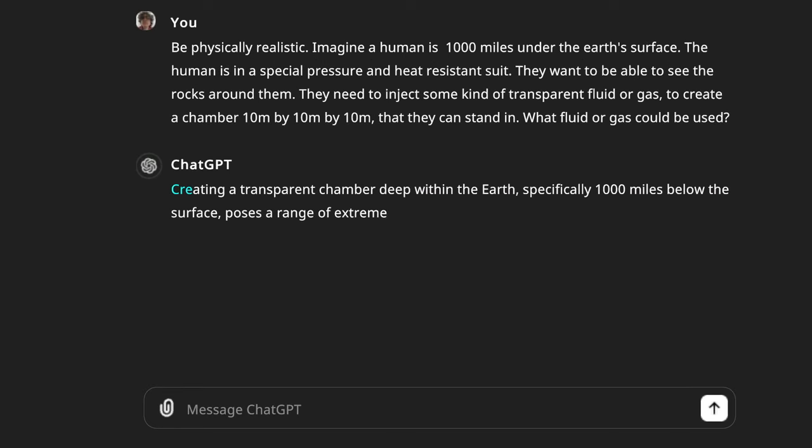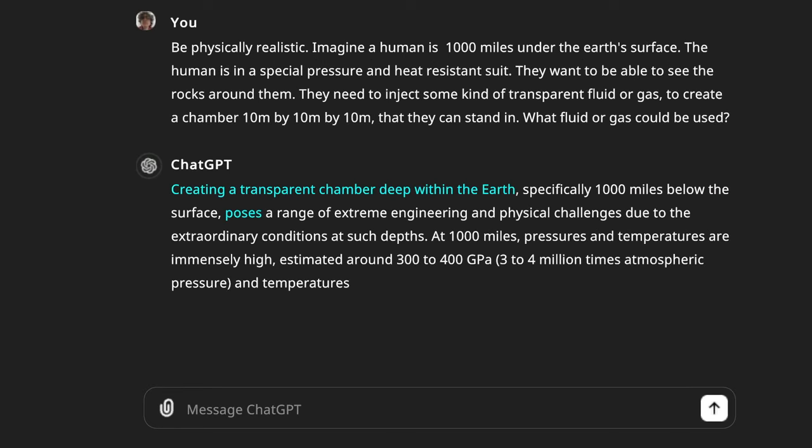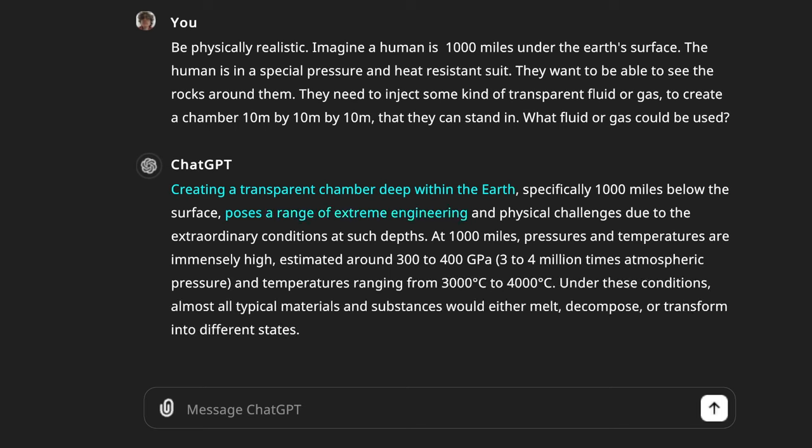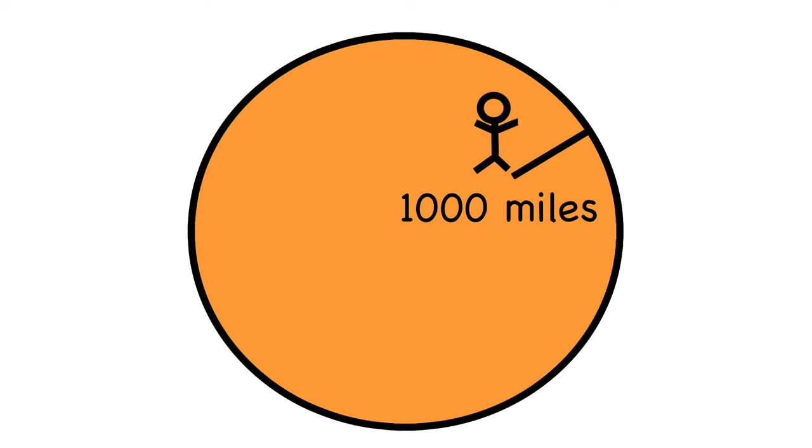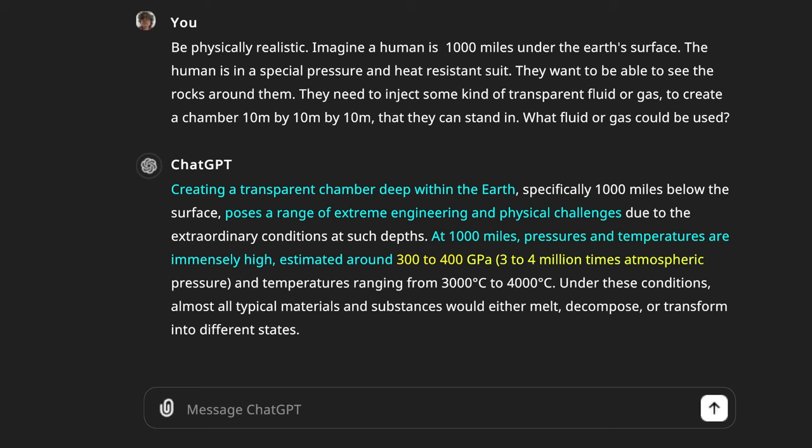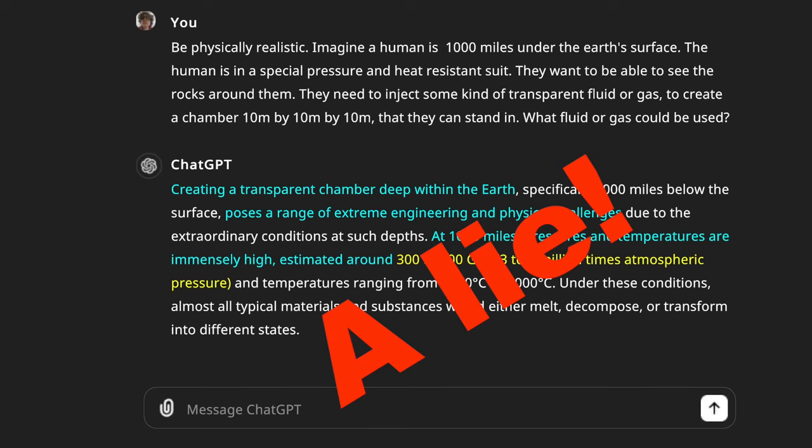Creating a transparent chamber deep within the Earth poses a range of extreme engineering and physical challenges. At 1,000 miles, pressures and temperatures are estimated around 300 to 400 gigapascals, around 3 to 4 million times atmospheric pressure. This turned out to be a lie, but I didn't find this out until a few days later, so I'm going to need to check some of these things myself.